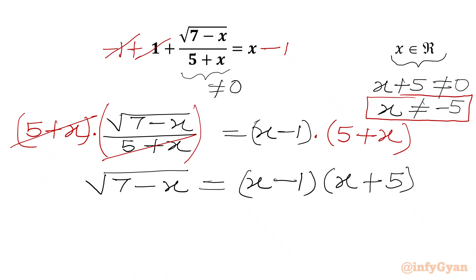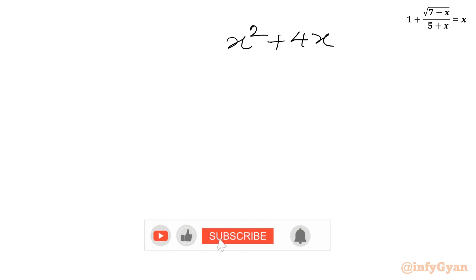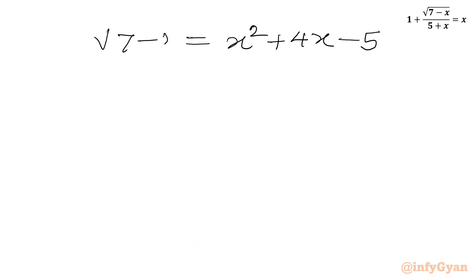Now we will multiply both brackets on the right hand side. x times x gives x squared; x times 5 gives 5x; minus 1 times x gives minus x; minus 1 times 5 gives minus 5. So 5x minus x is 4x, giving us x squared plus 4x minus 5 on the RHS, which equals square root of (7 minus x).